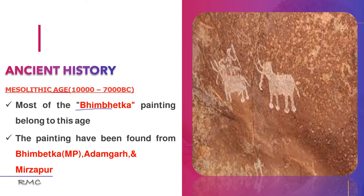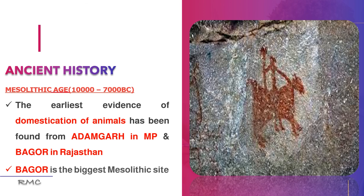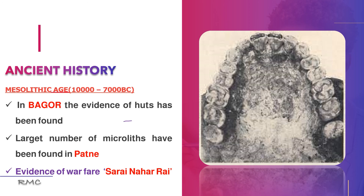Most of the Bhimbetka rock shelters, located near Bhopal in Madhya Pradesh, belong to this age. Cave paintings have been found from Bhimbetka in MP, Adamgarh, and Mirzapur in UP. The earliest evidence of domestication of animals has been found from Adamgarh in MP and Bagor in Rajasthan. Bagor is the biggest Mesolithic site in India, and evidence of huts has also been found there. A large number of microliths have been found in Patne, Maharashtra. Evidence of warfare between different groups in the Mesolithic age has been found at Sarai Nahar Rai.